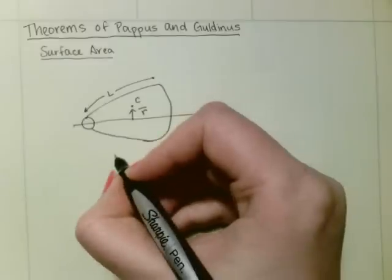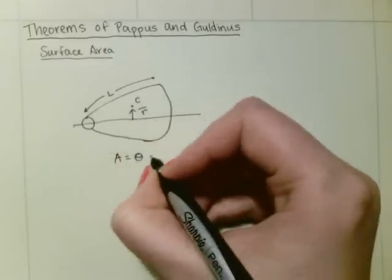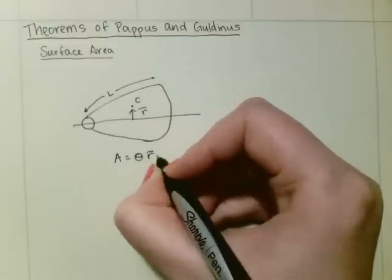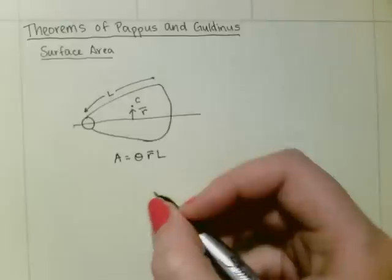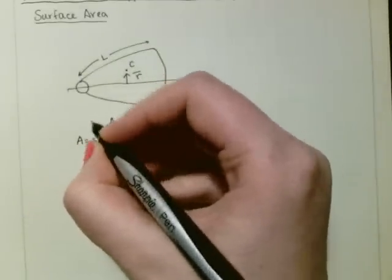So to do that, you can find your surface area by θ times r̄ times L, where A is equal to the surface area of the revolution.